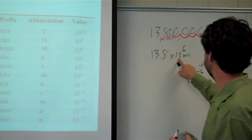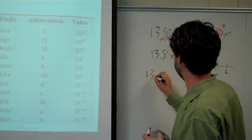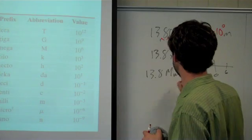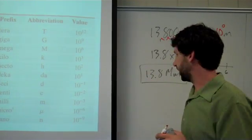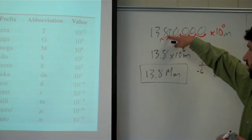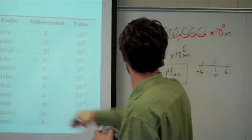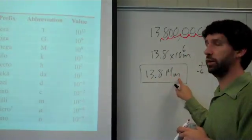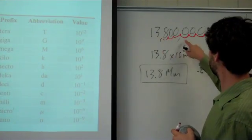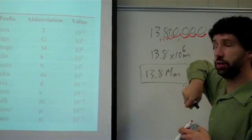Once again, our reasonableness check. This is a big value. That's a big value. That makes sense. Also remember that mega means million. So this means 13.8 million meters. Well, this happens to be... There's the thousands, there's the millions. So it is the millions.